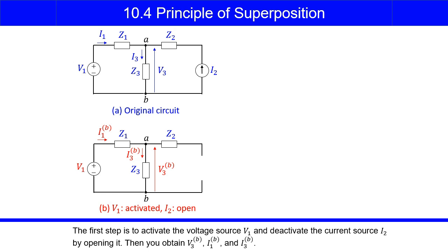The first step is to activate the voltage source V1 and deactivate the current source I2 by opening it. Then you obtain V3B, I1B, and I3B.